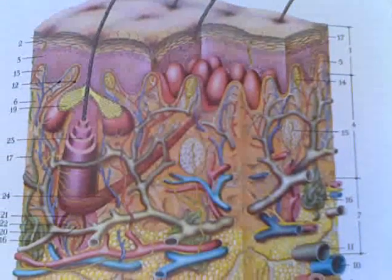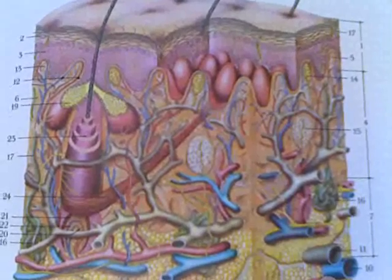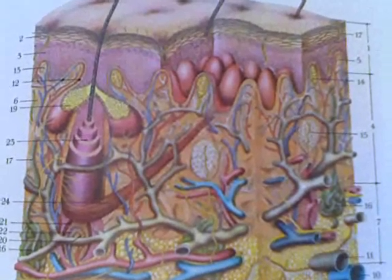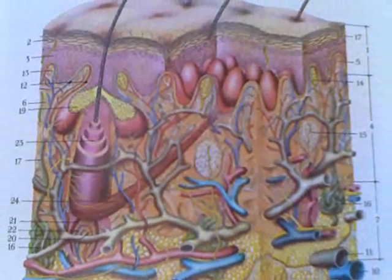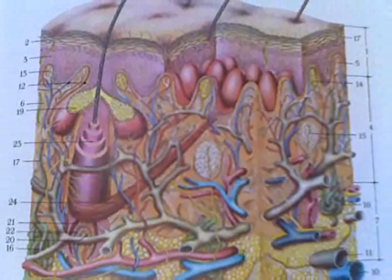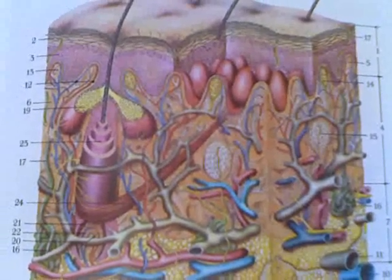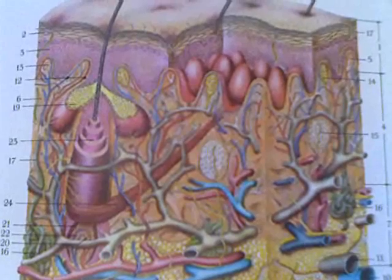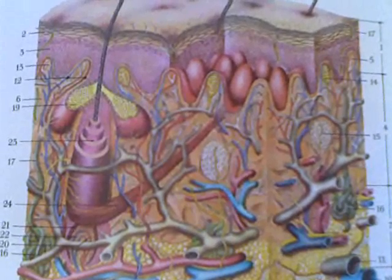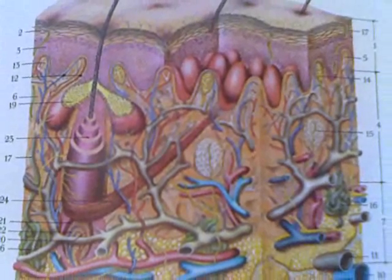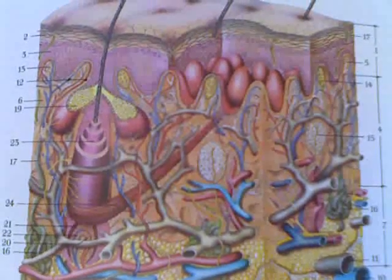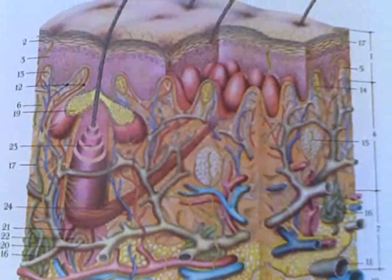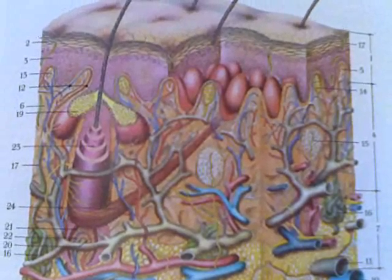Now we'll talk a little bit about the different specialized bodies within the skin that help communicate specific information. Number thirteen is a free nerve ending, and that is going to communicate pain, temperature, and to a degree pressure.